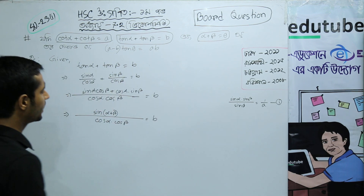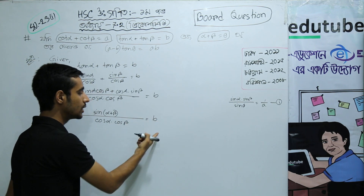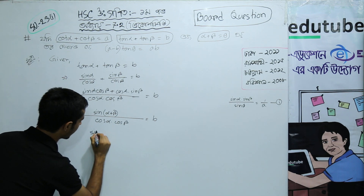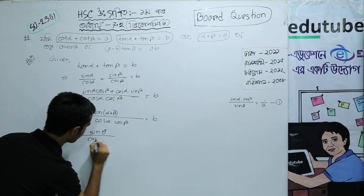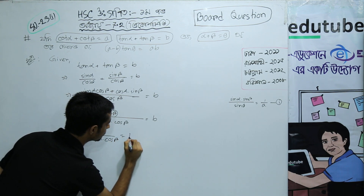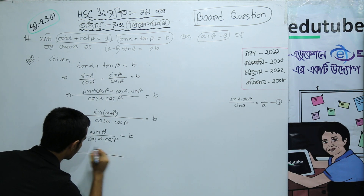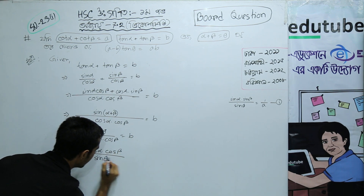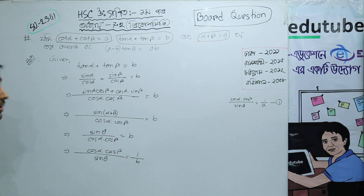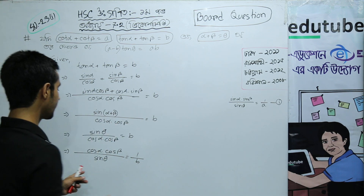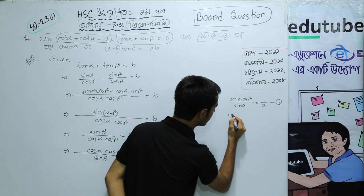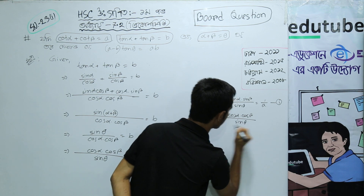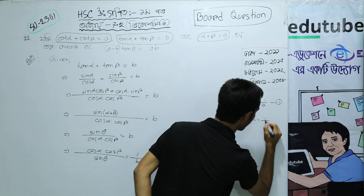So sin(α + β) over cos α·cos β equals B. Replacing α + β with θ: sin θ over cos α·cos β equals B. Therefore cos α·cos β divided by sin θ equals 1/B.